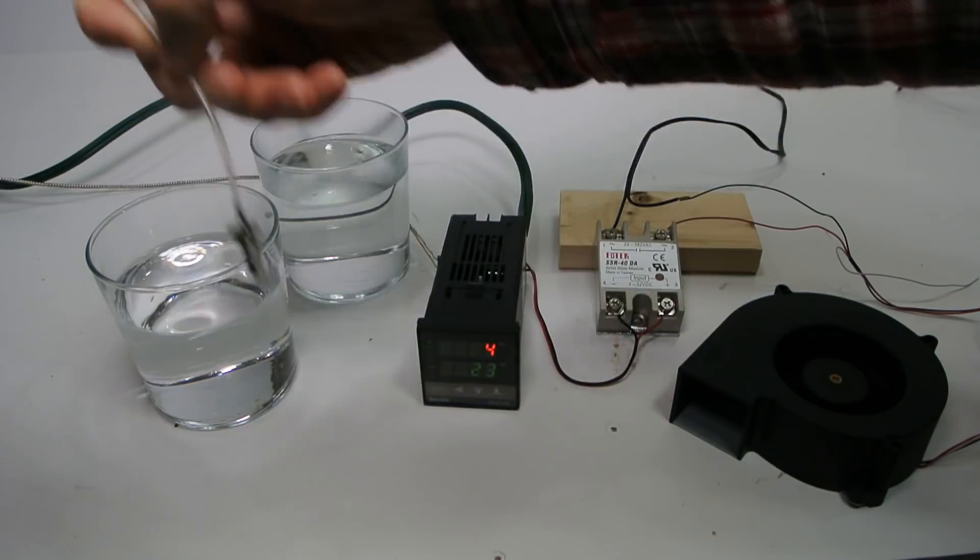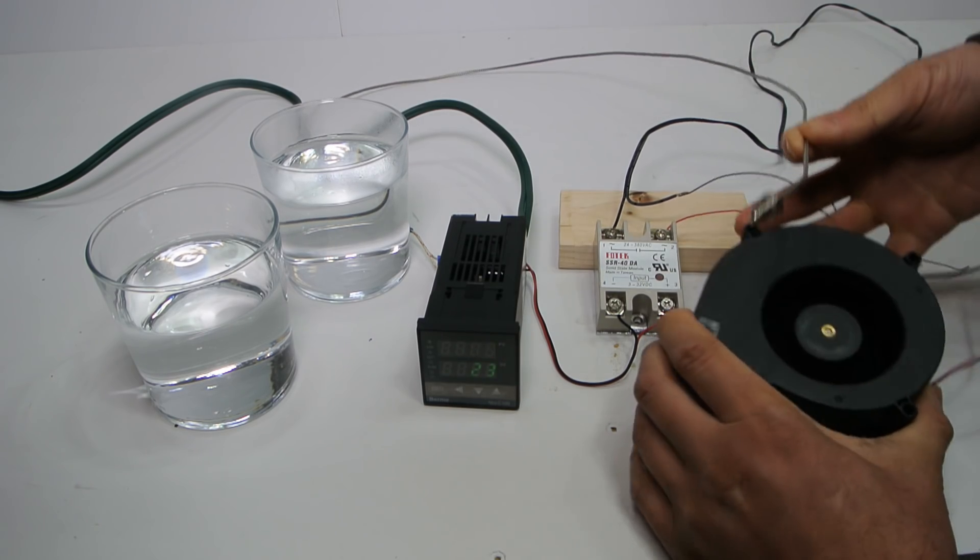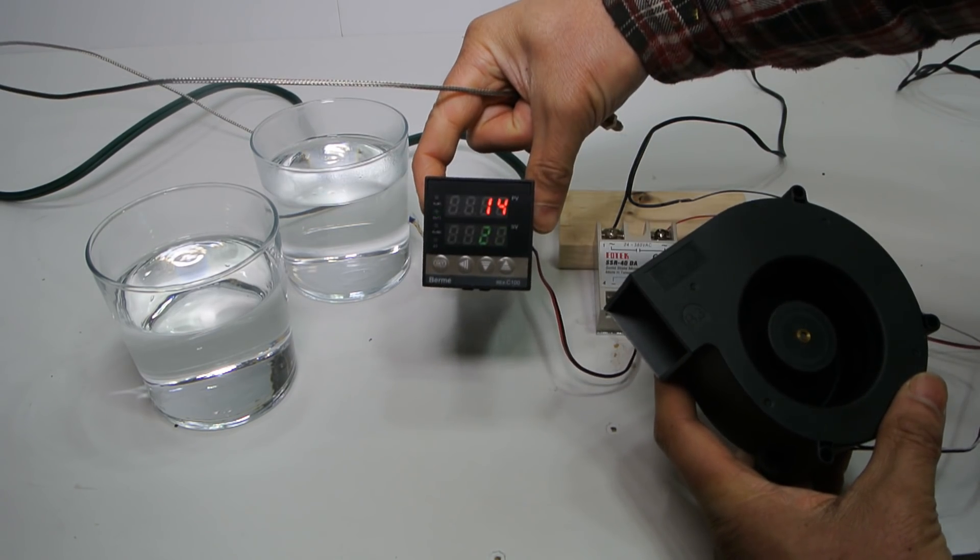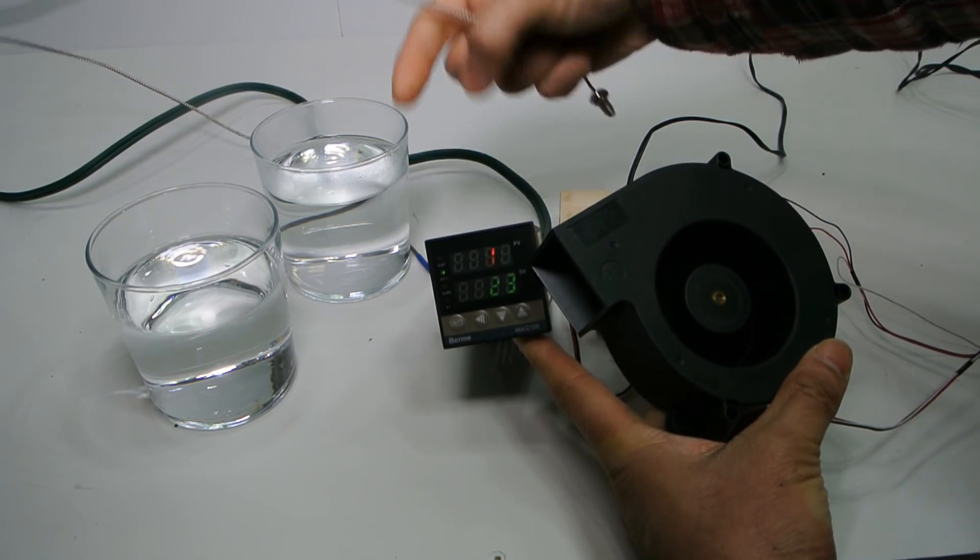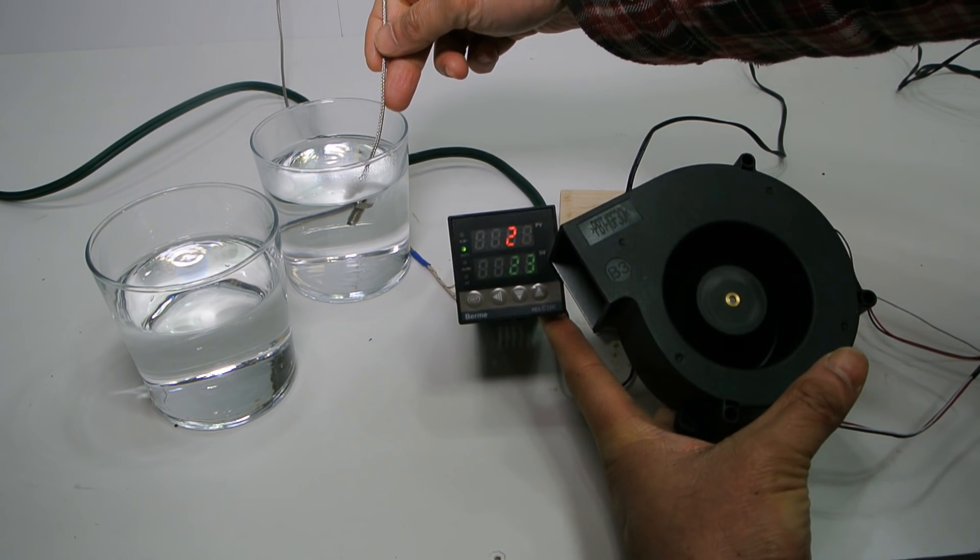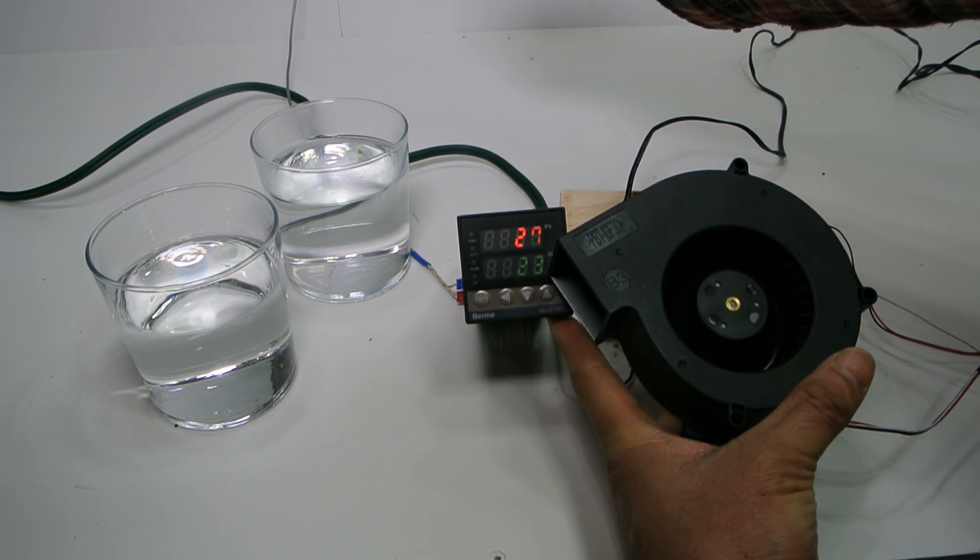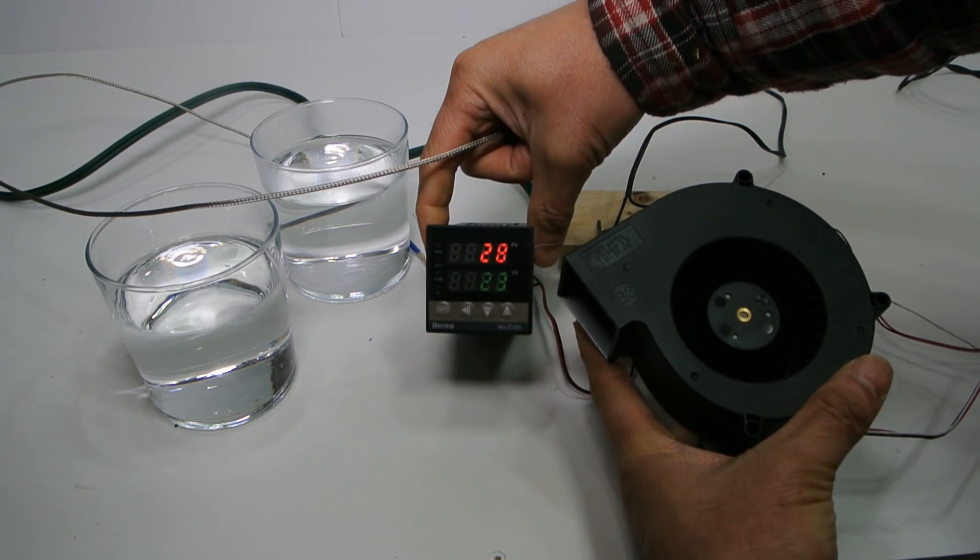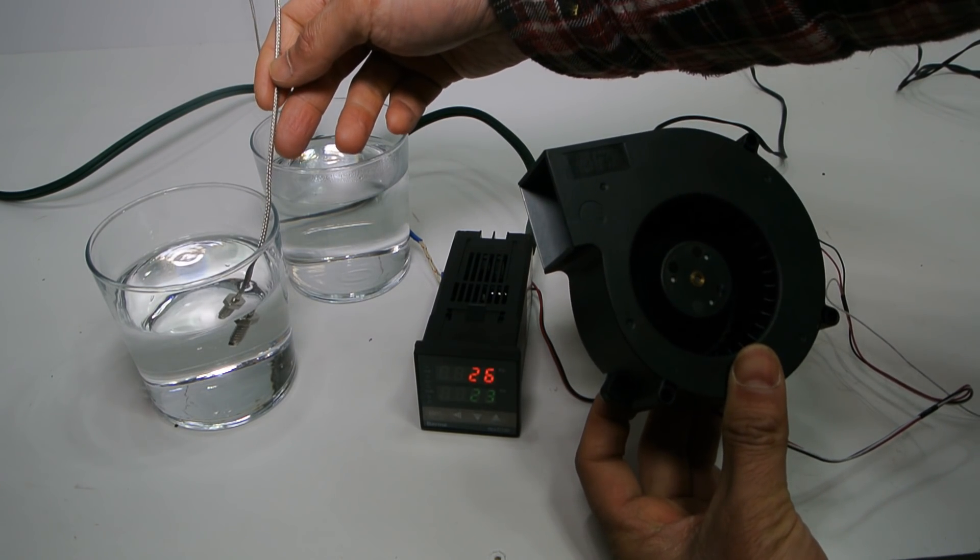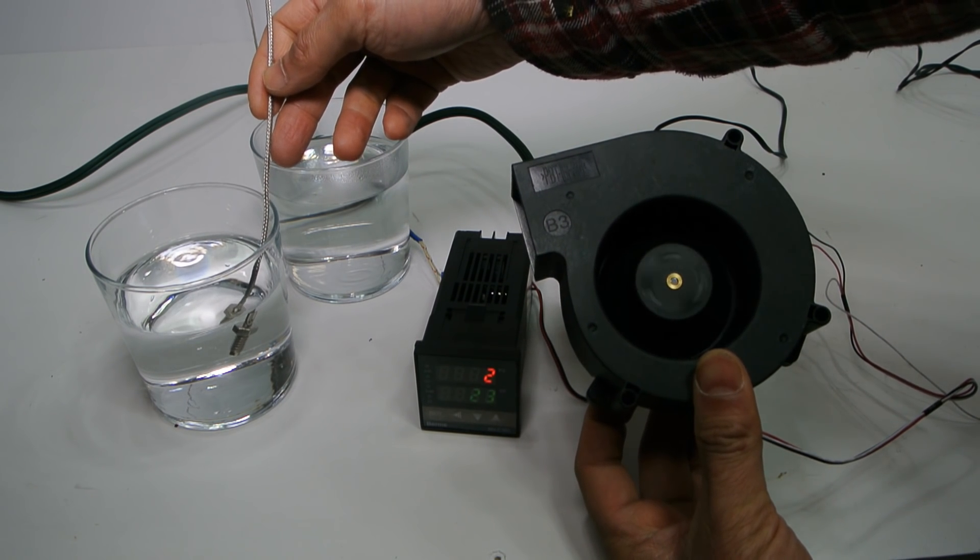Now I'm going to take my thermal coupler and I'm going to dunk it into the hot water. Remember, because the fan is going right now, once it hits the set value of 23, it will shut off. There. Now it's off.